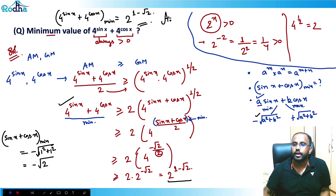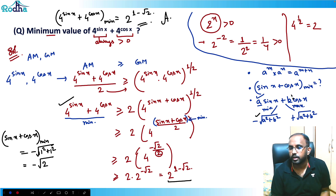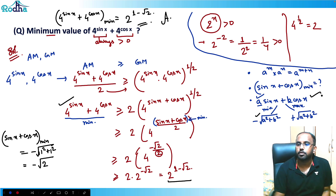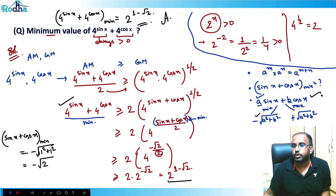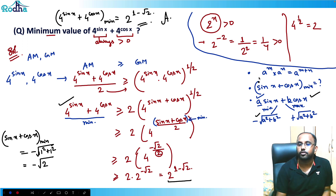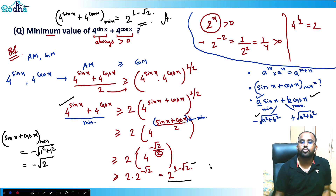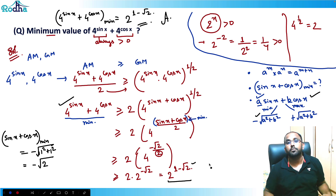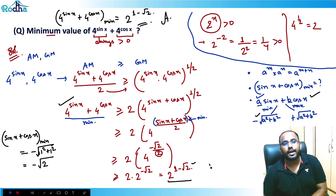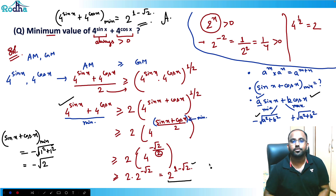This is a fine question involving a couple of concepts: AM-GM, along with the minimum and maximum value of a·sin x + b·cos x, and properties of exponents. It's a typical CAT-level question combining multiple concepts.